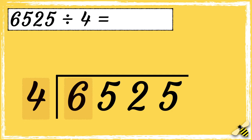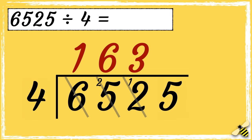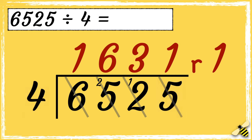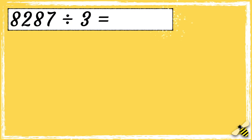How many fours go into 6? Four goes into 6 once with 2 left over. So now we can work out how many fours go into 12 — four goes into 12 three times. Now we work out how many fours go into 5 — four goes into 5 once with 1 left over, so 1 is the remainder. The answer is 1631 with a remainder of 1.